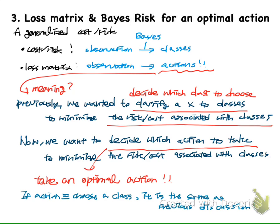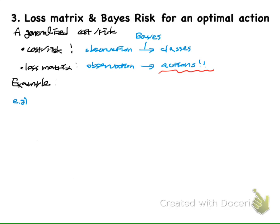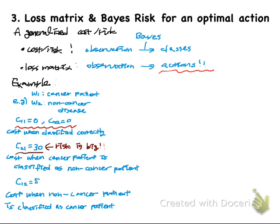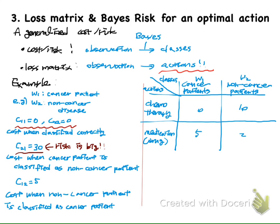If we want to view the cost or risk that we previously discussed in terms of the loss matrix, then we just need to put the action into the choosing of a class, and it can be the same as the previous discussion. We will compare these two concepts using an example. We just have the risk meaning that when they are misclassified, one case is riskier than the other. Now, with this loss matrix, we can have multiple actions.